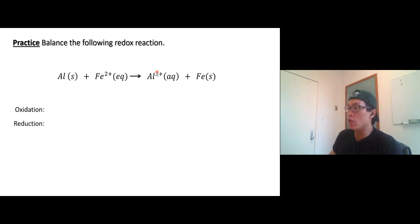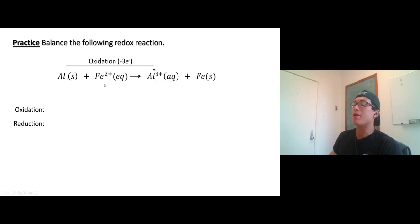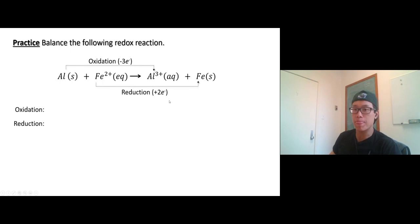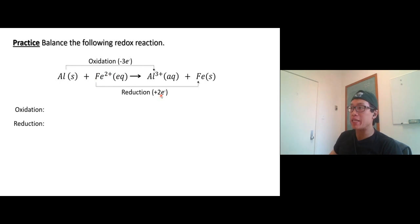So aluminum to aluminum three — that's an oxidation reaction, loses three electrons, right? And iron two becomes regular iron — iron two becomes iron zero — so that's reduction, reduce the oxidation number. Now, if you look at the electrons out from the oxidation reaction, it's three electrons. Iron has to pick up three electrons, but iron can only pick up two.